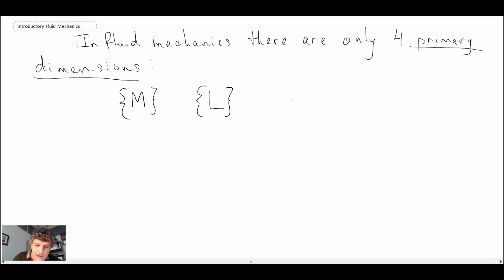L is for length. T denotes time. And the last one we'll use is theta, which denotes temperature. So we have mass, length, time, and temperature.